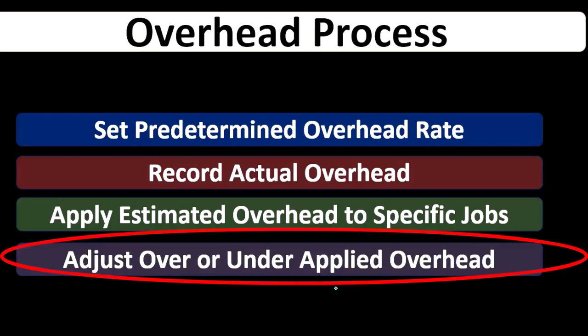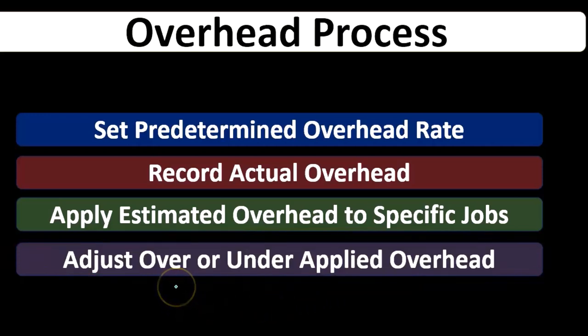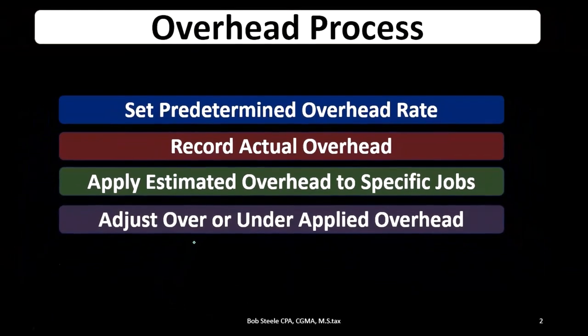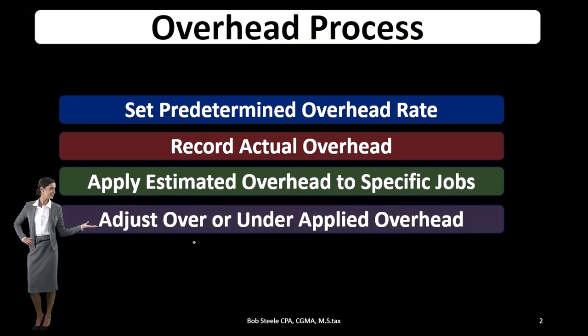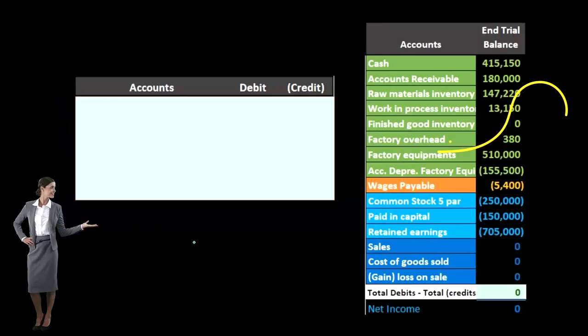There are three things that can happen with an estimate: we could be under applied, over applied, or exactly right — our estimate could be perfect. That's not going to happen in real life. So we're almost always going to be under or over applied and we'll have to compensate for that in some way.